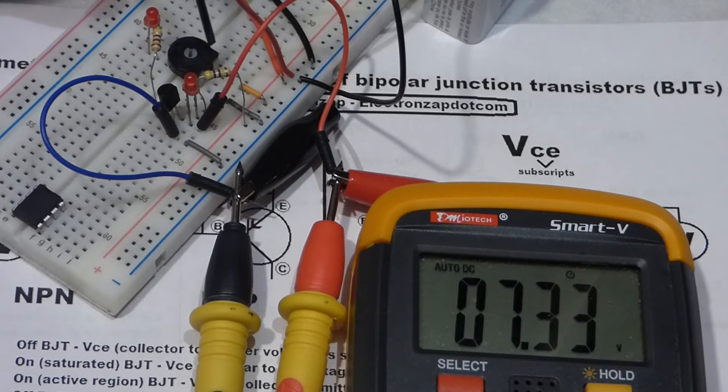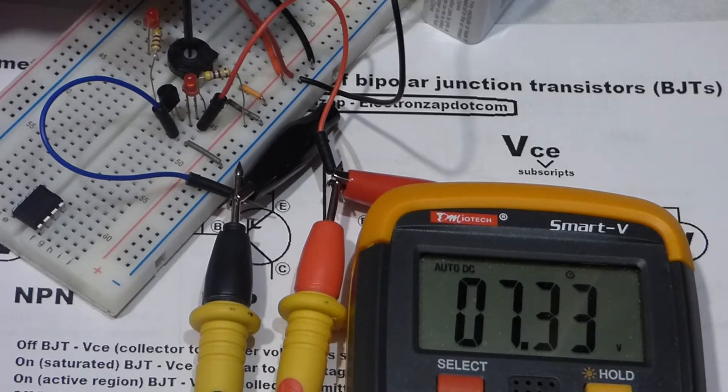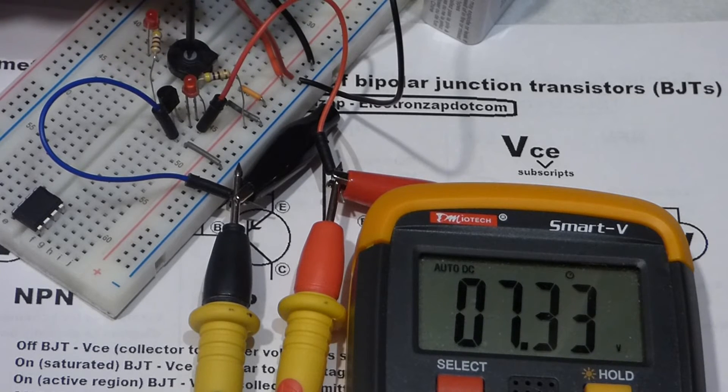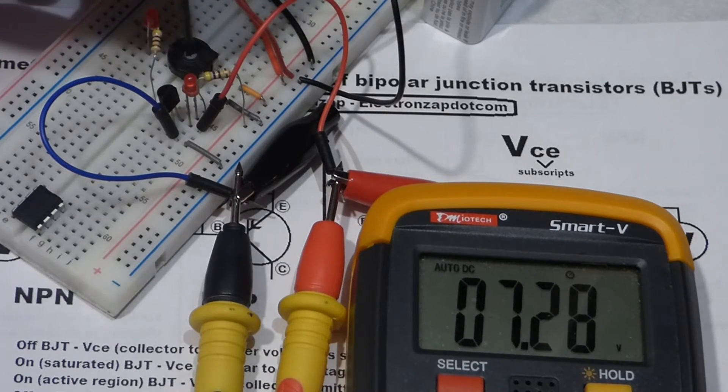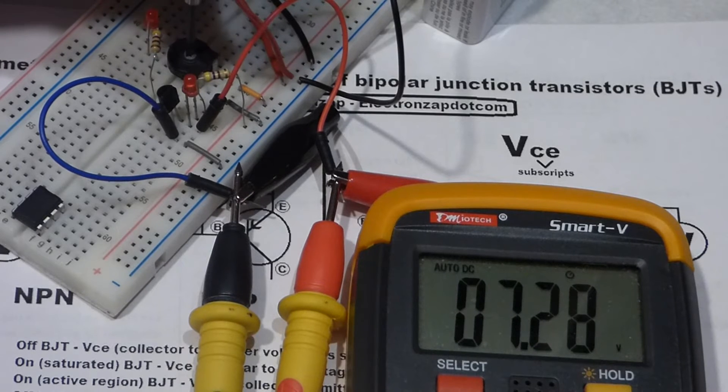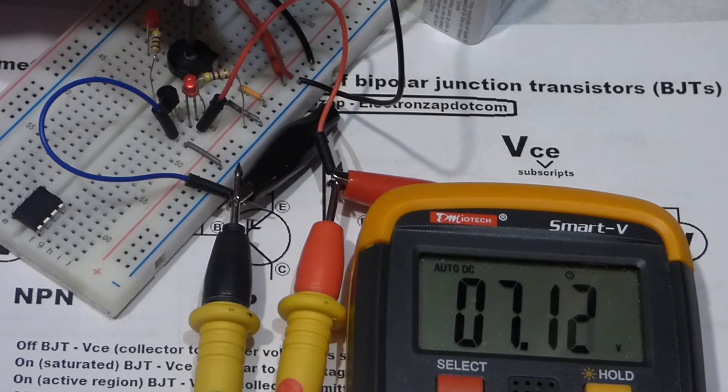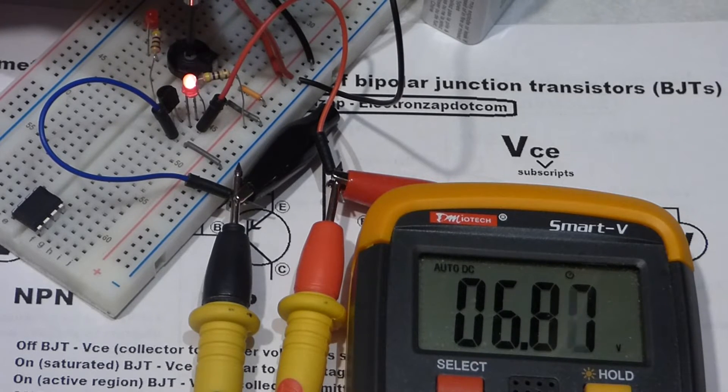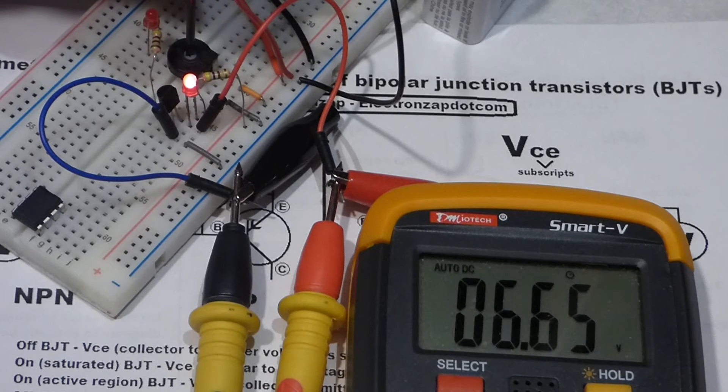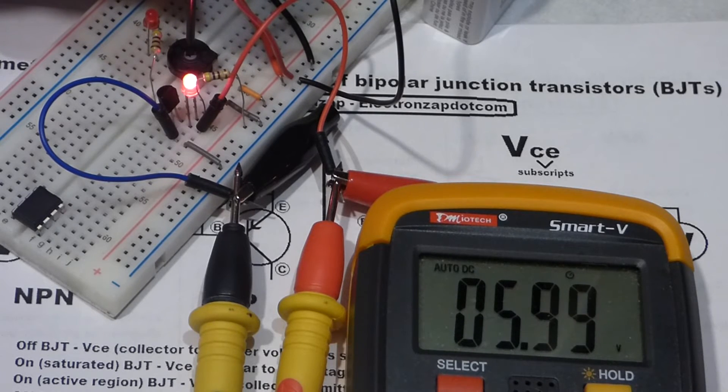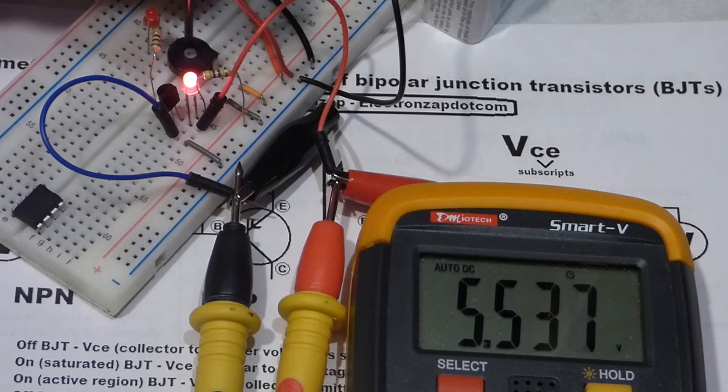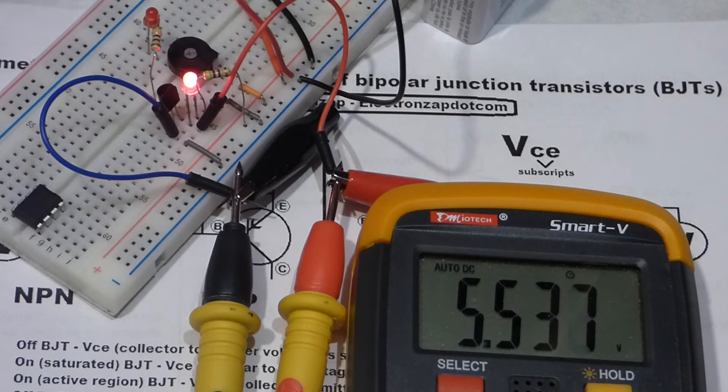And so now I'm going to turn the transistor on. Right now it's off, it's at the cutoff. We're going to move it to the active region. Now you'll see the voltage is dropping across the collector to the emitter. And right at about the point where the voltage started dropping, the LED here turned on.